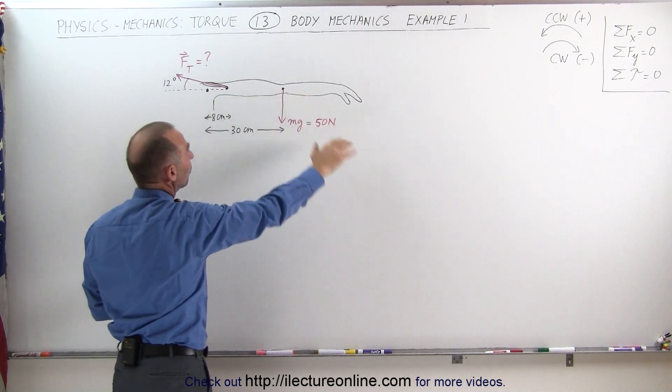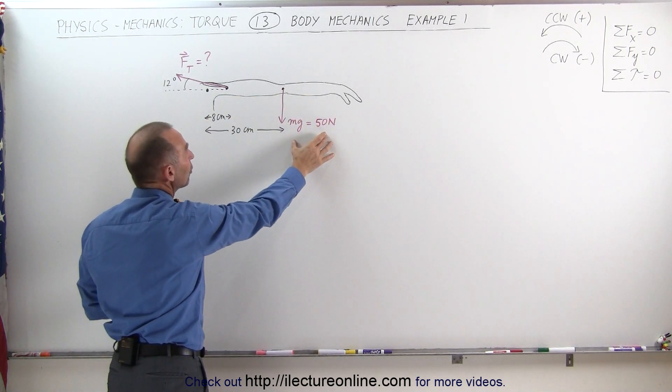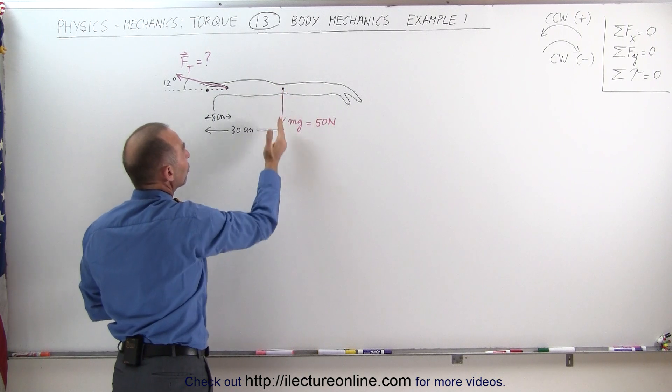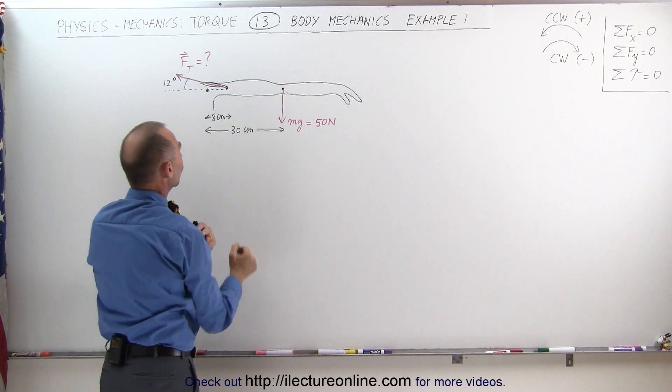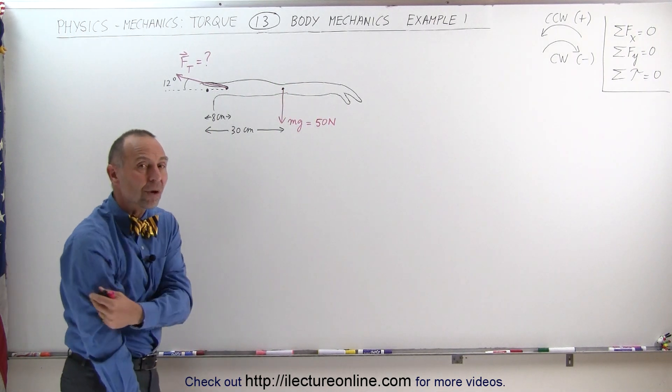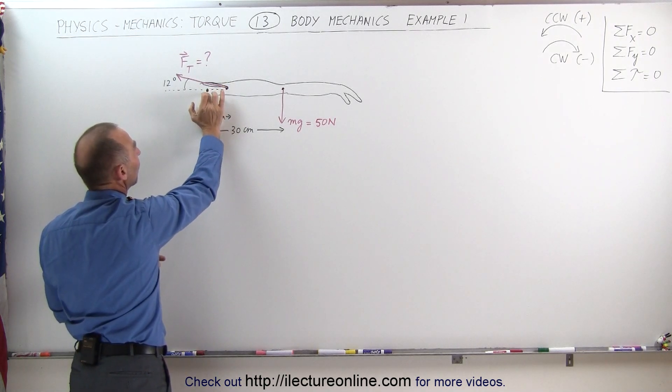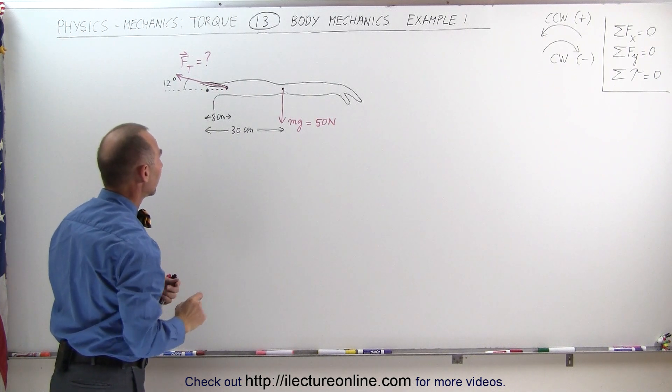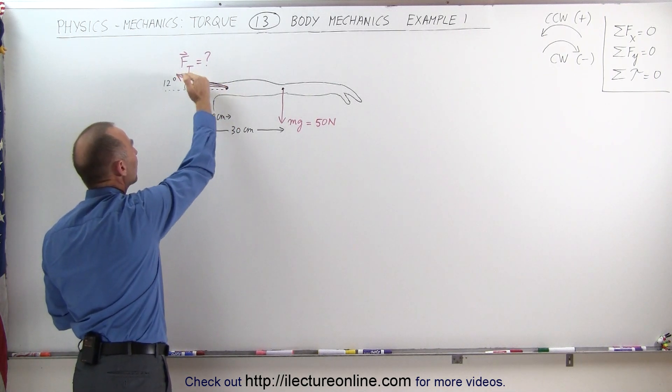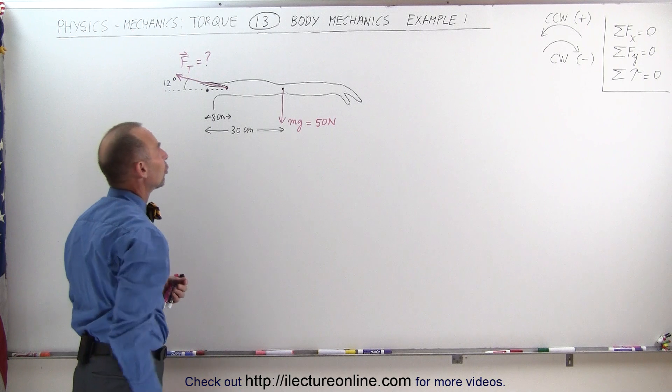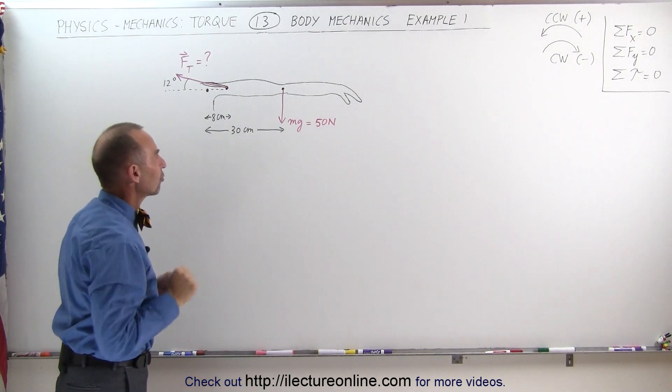Let's say that the weight of the arm, when it's stretched out like that, is 50 Newtons, and the center mass is about 30 centimeters away from the joint in the shoulder. The tricep is connected to the bone about 8 centimeters away from where the arm pivots right here in the shoulder joint. The angle that that muscle makes is about 12 degrees relative to the horizontal when the arm is outstretched like that.